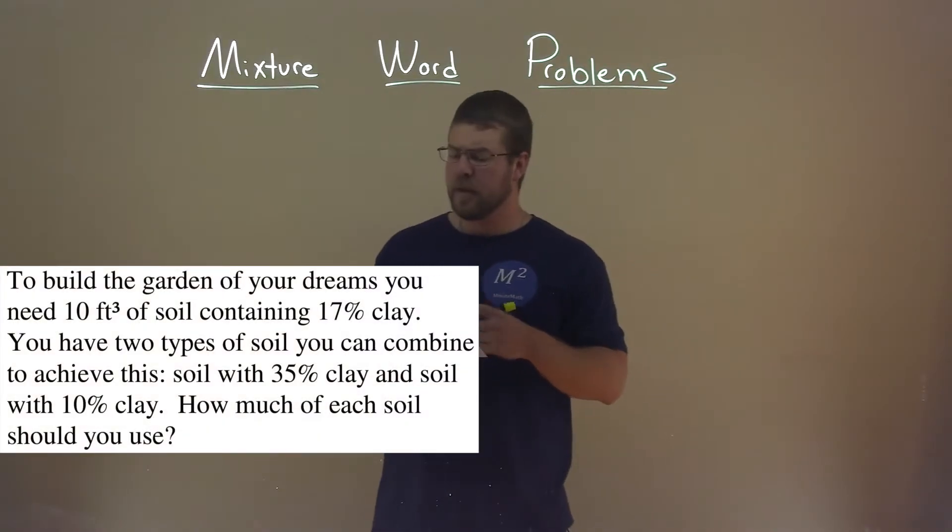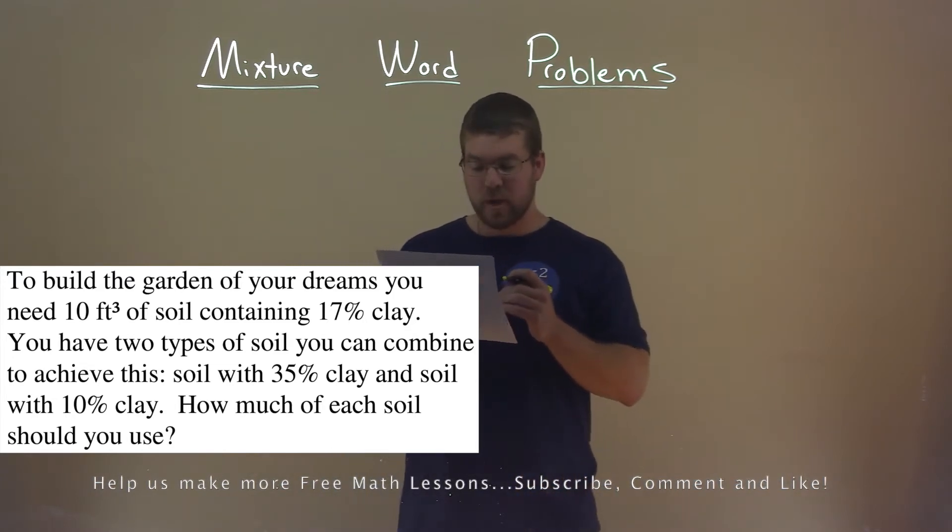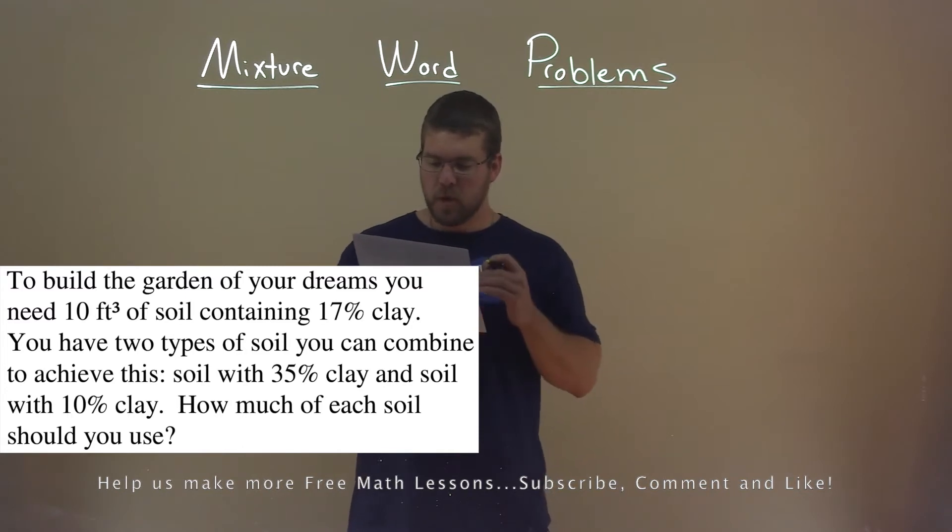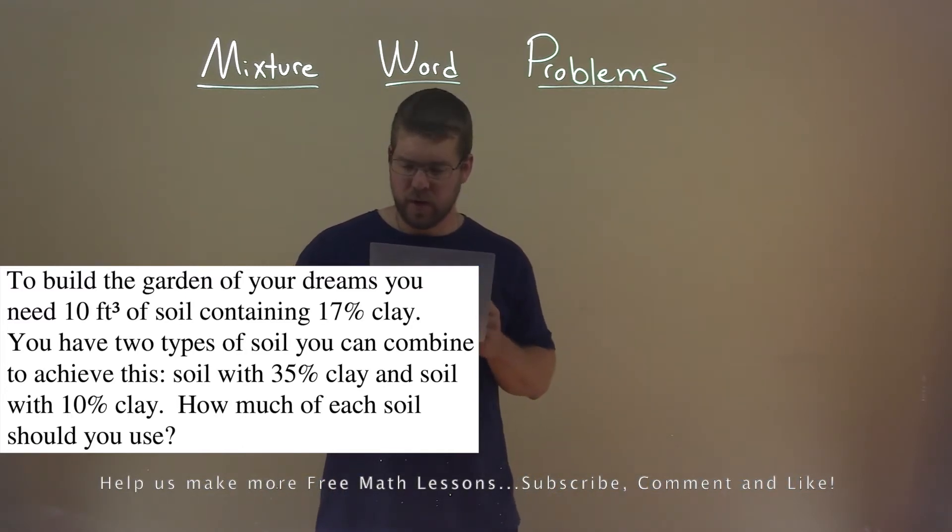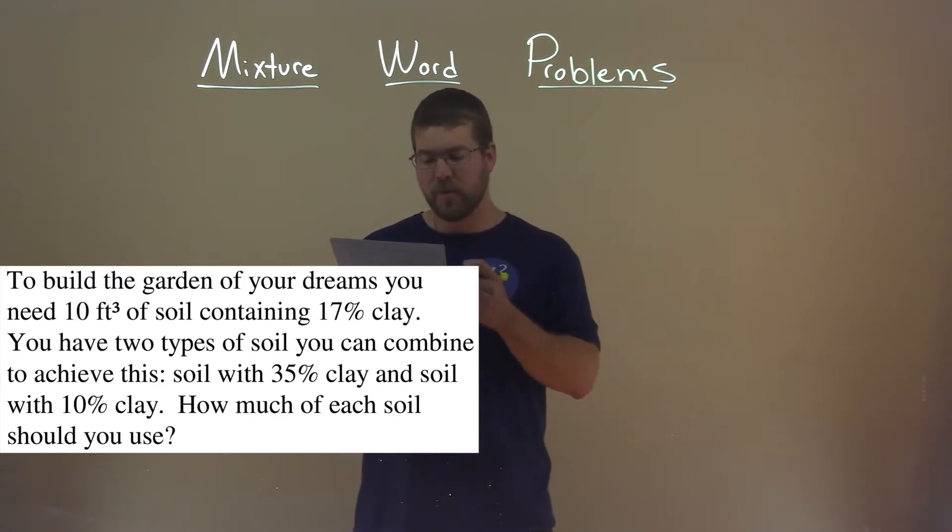We're given this problem right here. To build the garden of your dreams, you need 10 cubic feet of soil containing 17% clay. You have two types of soil you can combine to achieve this: soil with 35% clay and soil with 10% clay. How much of each soil should you use?